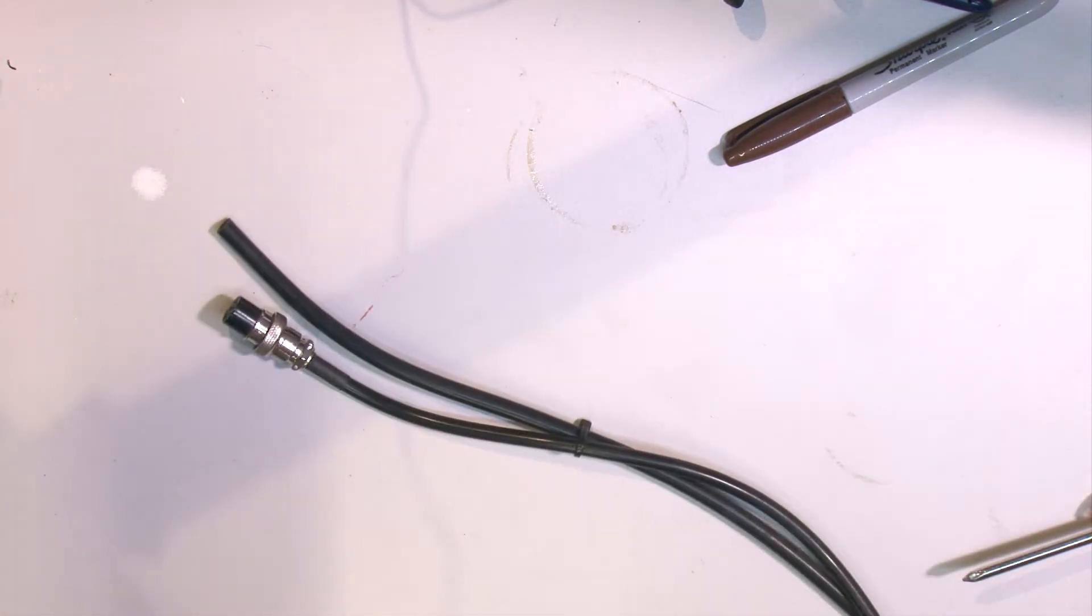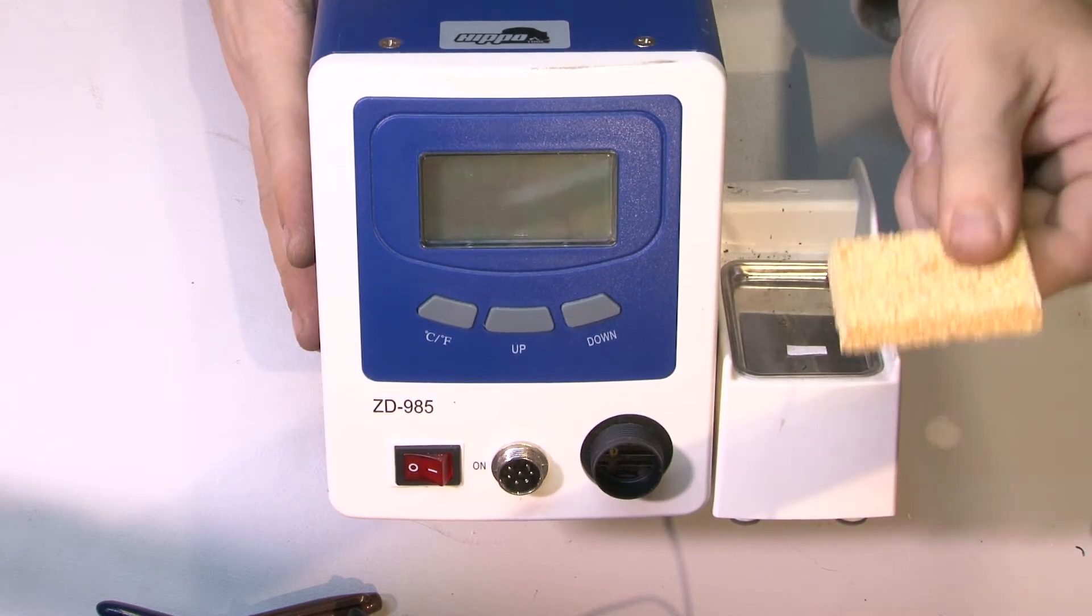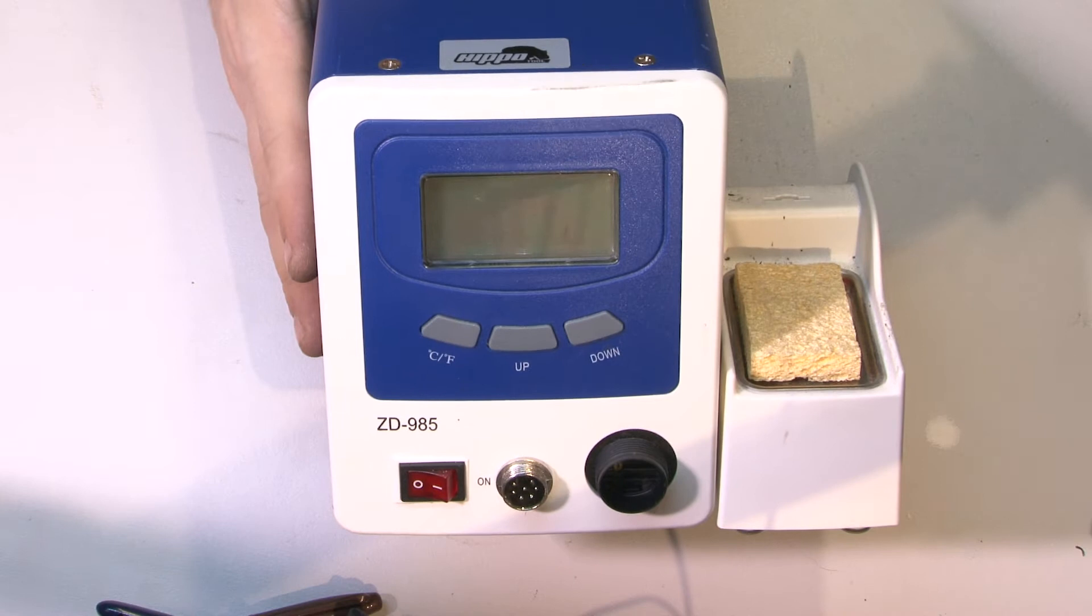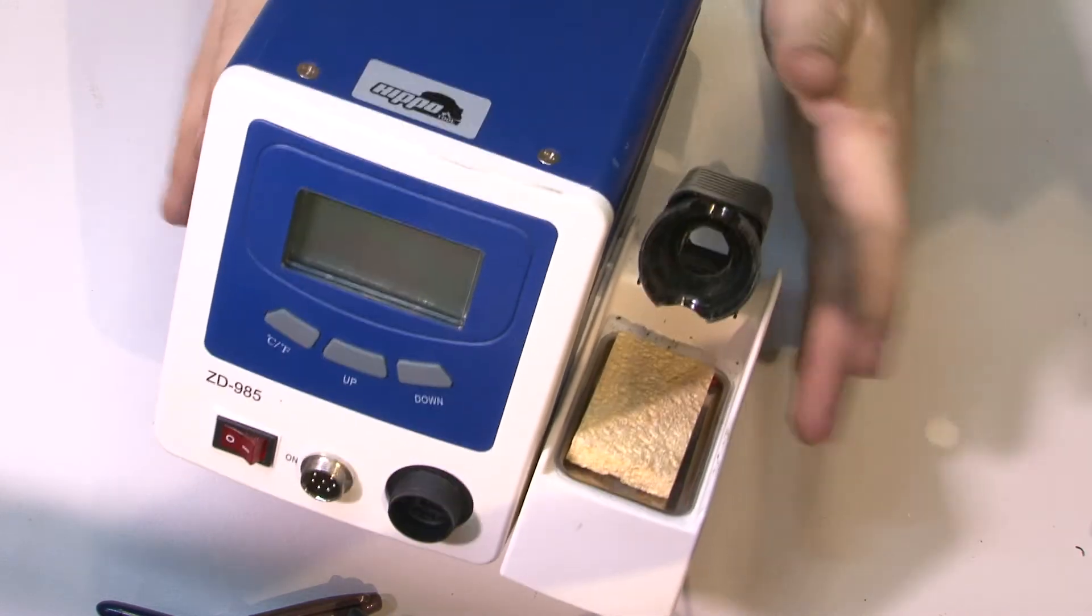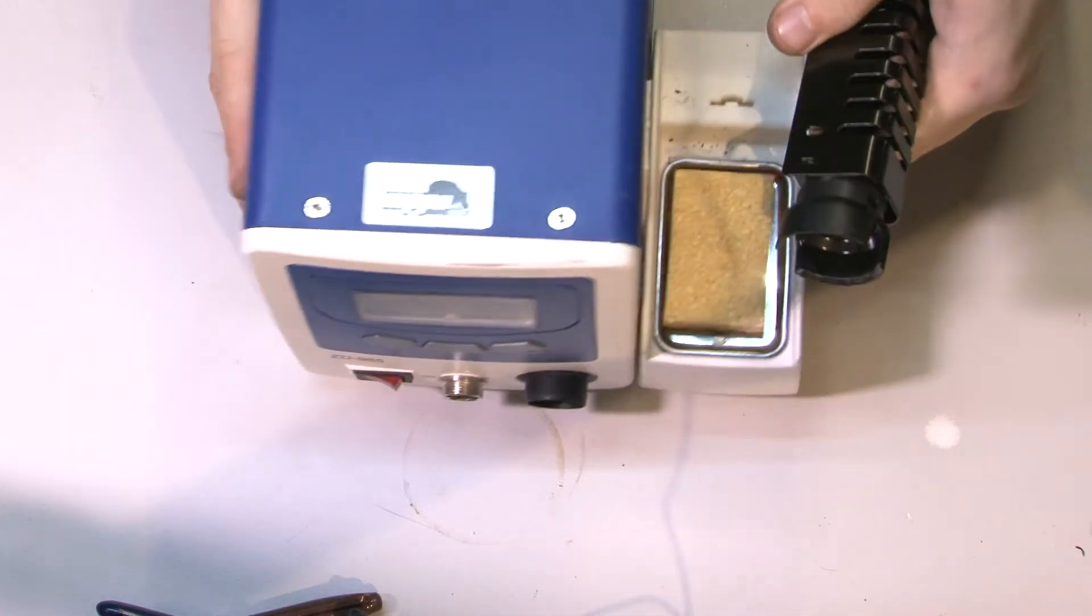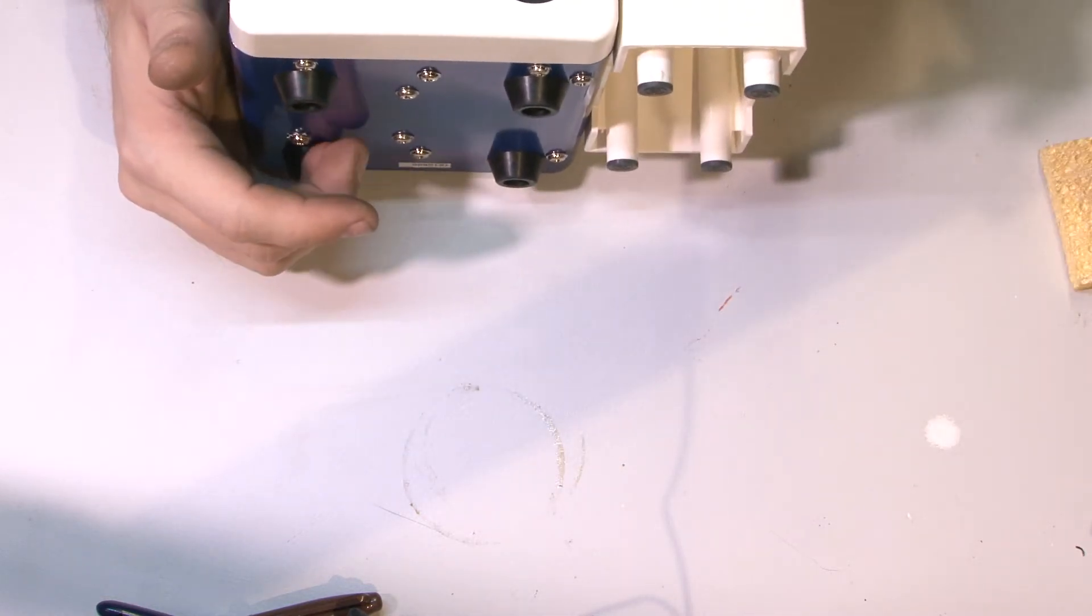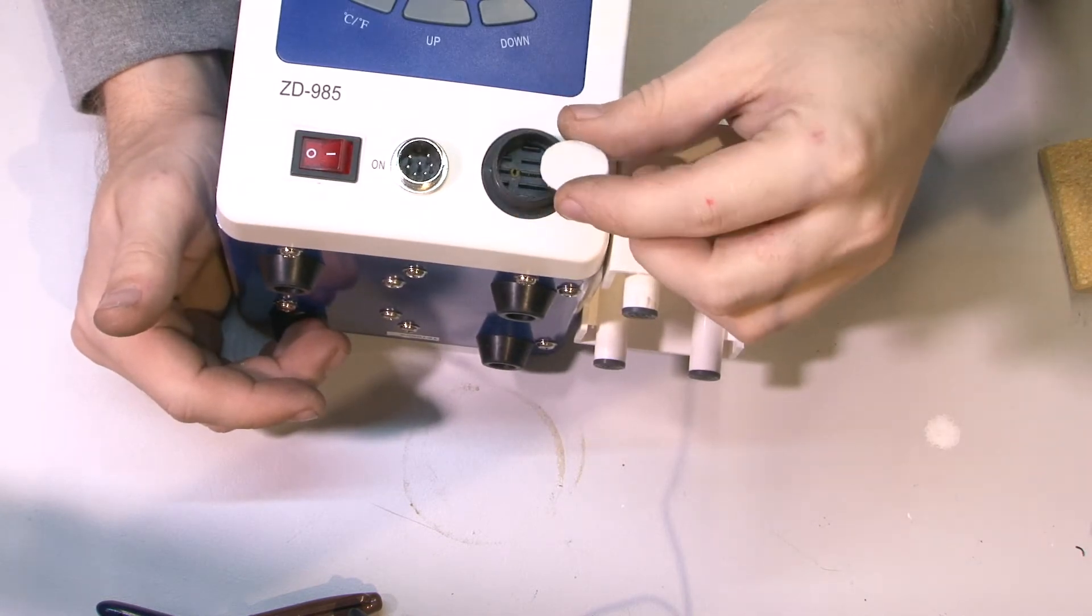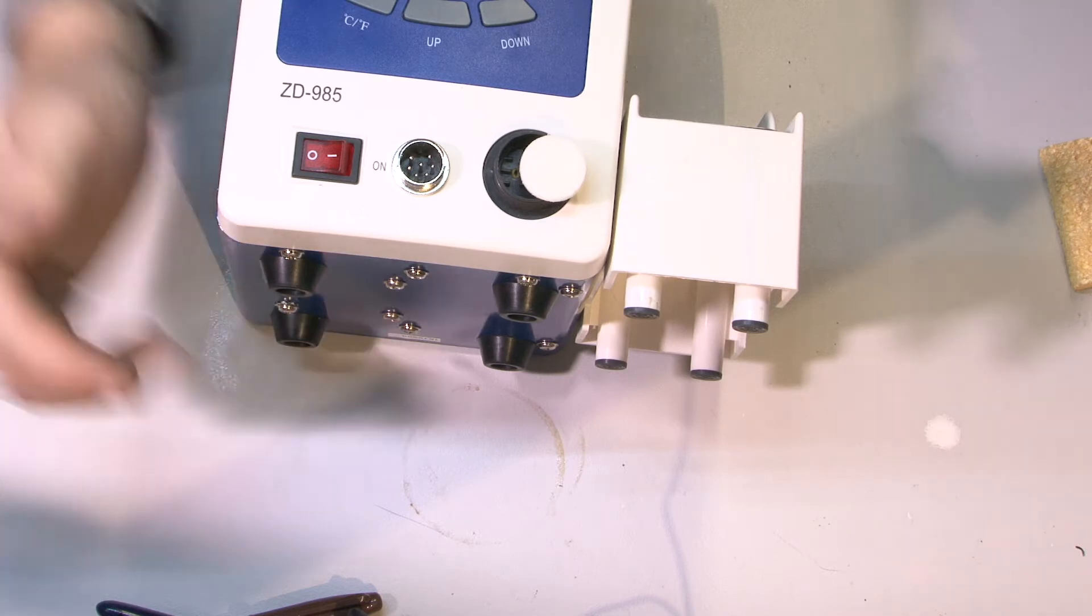It comes with a little sponge that you're supposed to wet. A lot of people don't know that and use it dry, but you wet it in water and place it here. It also comes with this holder that you put on the side. However, when you're working because of the vibration it makes noise, which is quite annoying. Now I'm going to pull this apart and look what's inside and clean it.